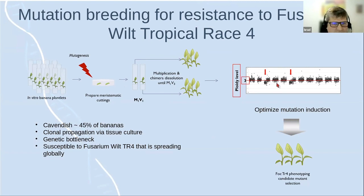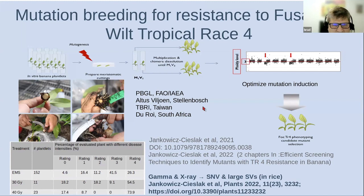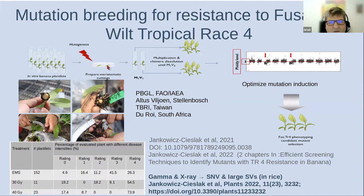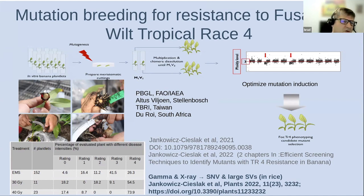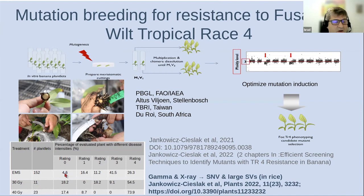We collected collaborators with different expertise. For this part of the project, we partnered with Altus Viljoen's group at Stellenbosch University in South Africa, who worked with DuRoy, a company that donated the plantlets. After optimizing mutagenesis in Austria, material was sent to Taiwan for pot-level screening for Fusarium resistance. With both chemical mutagenesis and gamma radiation, we observed percentages of plants showing no disease symptoms at this developmental stage.